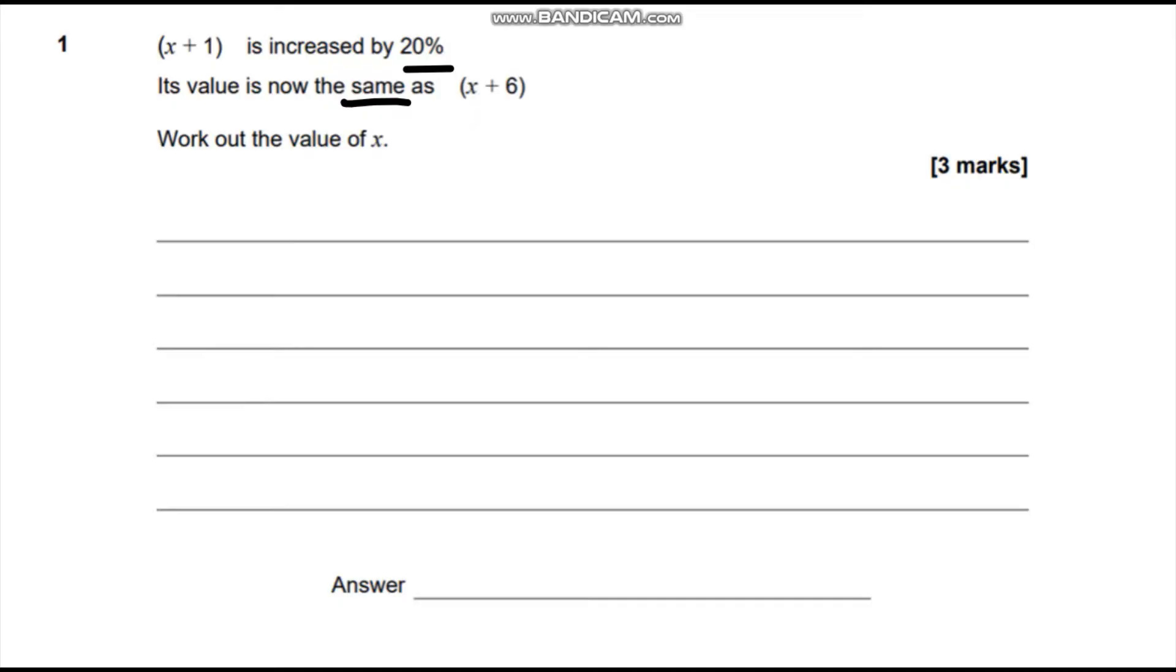This being the same means we are going to form an equation. It says x plus 1 is increased by 20%. So if we're increasing by 20%, we are multiplying it by 1.2.